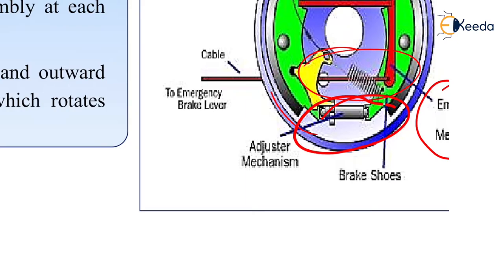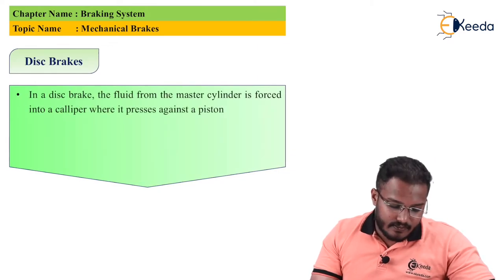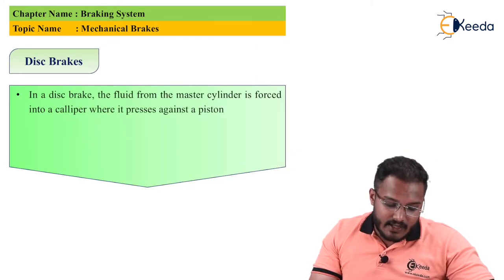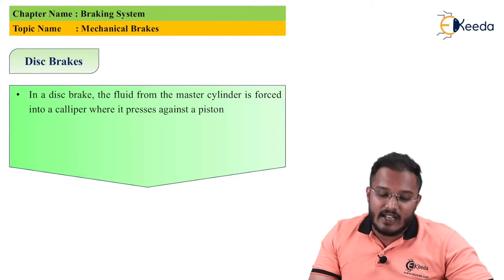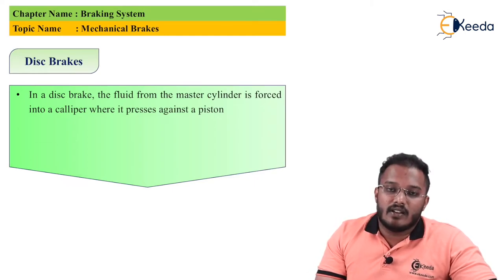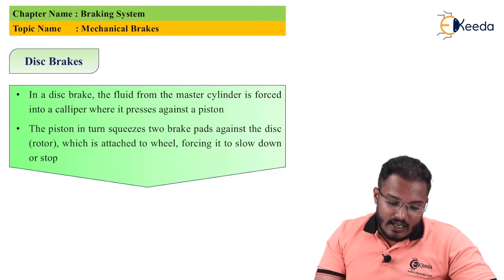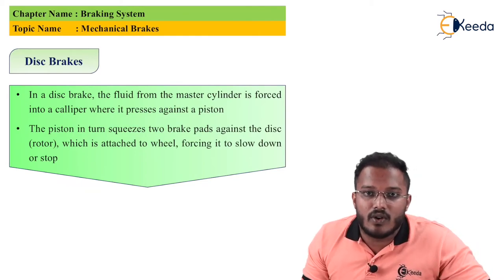Next type is disc brakes. In this brake, the fluid from the master cylinder is forced into the cylinder where it presses the pistons against the drums. The piston in turn squeezes the two brake pads against the disc, which is attached to the wheel, forcing it to slow or stop.